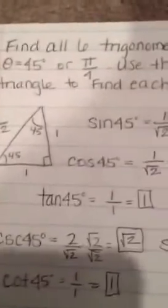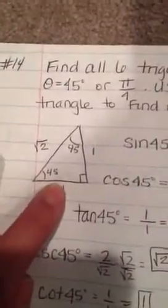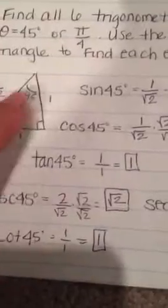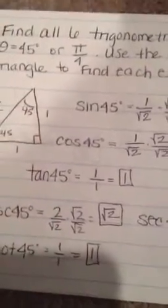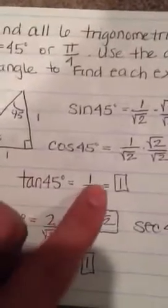Cosine of 45 is adjacent over hypotenuse so that's 1 over radical 2 so multiply both sides by radical 2 would be radical 2 over 2. Then tangent is adjacent over opposite, that would be 1.